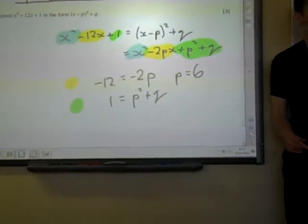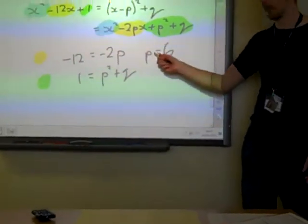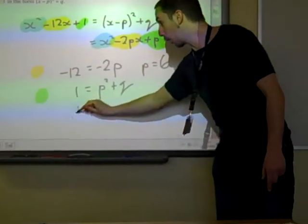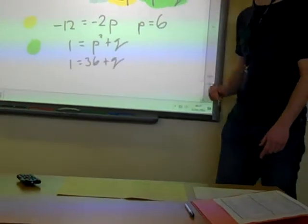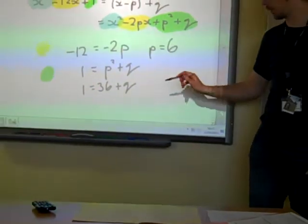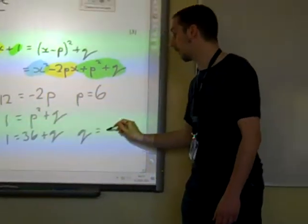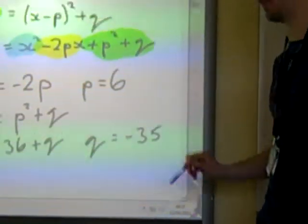Comparing the number bits, we're going to say that 1 equals p² + q. Which might be tricky, except we know what p is. p is 6 from that bit. So 1 is 36 plus q, p squared. So q is -35.